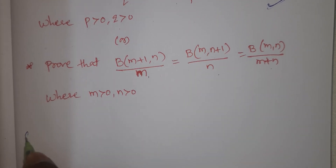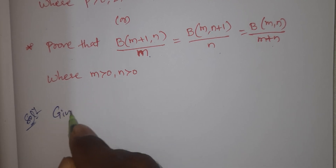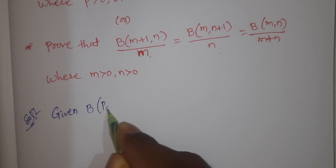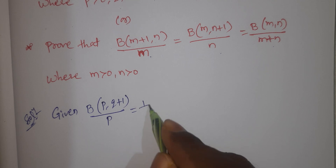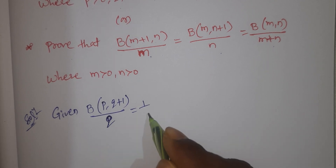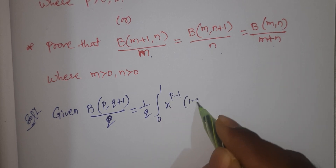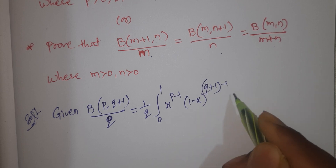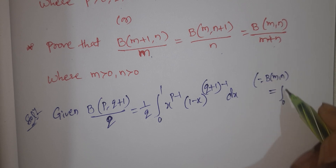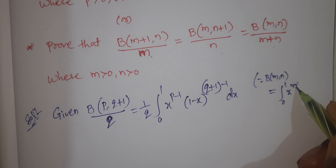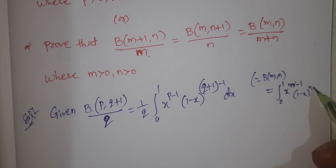Let's see the solution. Given beta of p, q plus 1 by q equals — by the definition — 1 by q times the integral from 0 to 1 of x to the power of p minus 1, times 1 minus x to the power of q plus 1 minus 1 dx. We use the definition: beta of m, n equals integral 0 to 1 of x to the power of m minus 1 times 1 minus x to the power of n minus 1 dx.